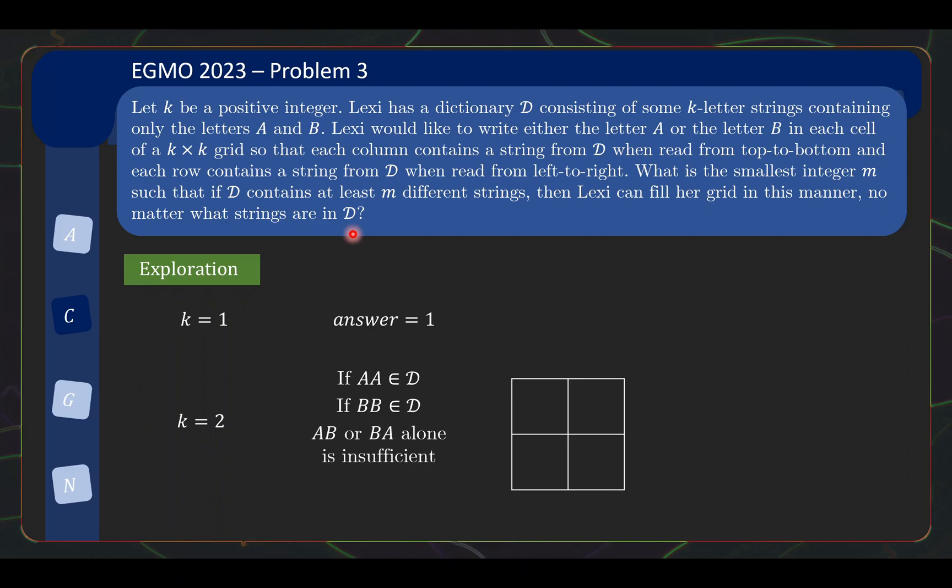The question is, is AB or BA by itself sufficient? The answer is no, right? If we only have AB, we are forced to use AB, then nothing starts with B and we will not be able to fill up the second column. So AB or BA alone is insufficient. Is D equals AB, BA enough? Yes, because you can then fill AB, BA, and BA.